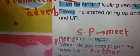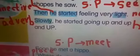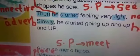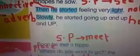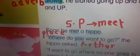Soon he met a hippo — highlight 'hippo,' this is our third character in the story. Highlight 'met' — it's the simple past of 'meet,' which means to see a person face to face. 'Where do you want to go?' the hippo asked. 'Where' is a question word used to ask about places. The hippo asked Arthur about the place he wants to go. Actually, the hippo was a character from the clouds — the funny shape Arthur imagined.